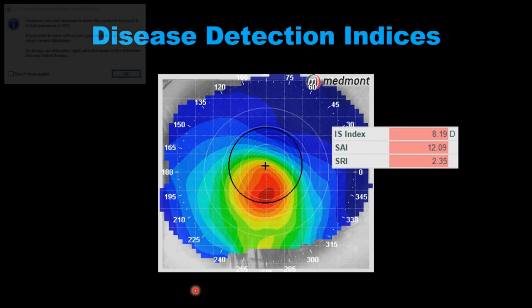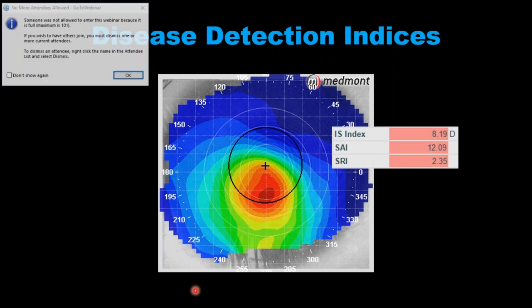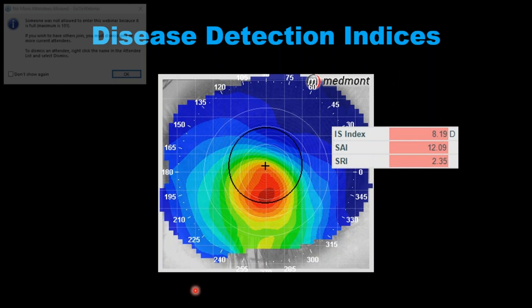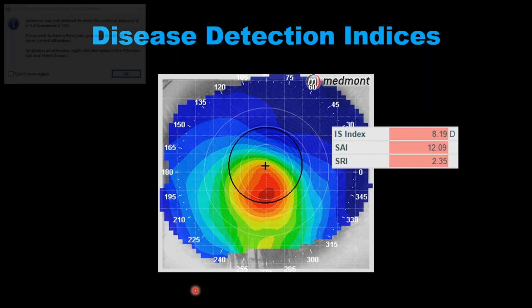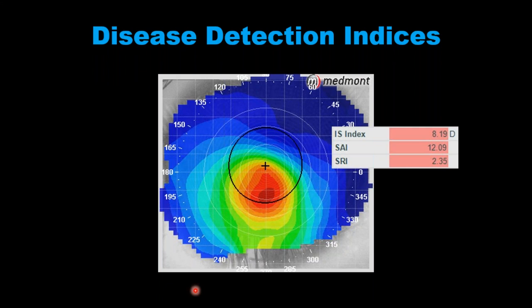Another thing we might use the topographer for is to understand patients that are truly irregular versus those that just have a displaced apex. Podemos verificar con el mapa los índices que nos dicen si esto es normal, si simplemente es un ápice desplazado — lo cual no es lo mismo que una córnea realmente irregular. Podemos verificar los índices de detección con este tipo de mapa y esto aplica a topografía en general, no de una marca en específico.